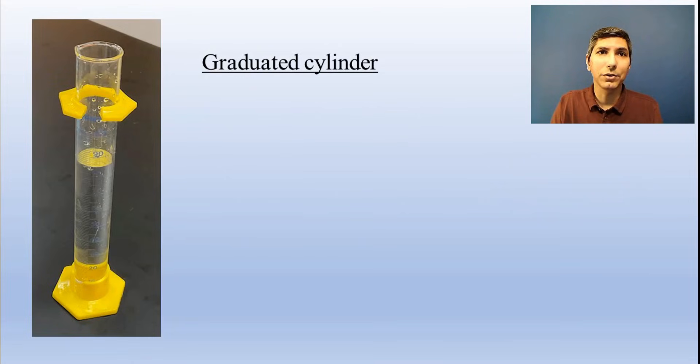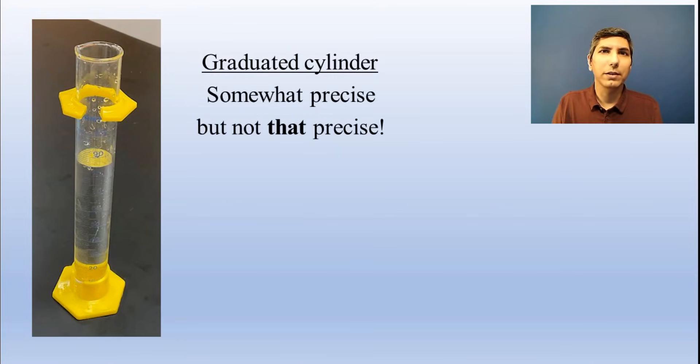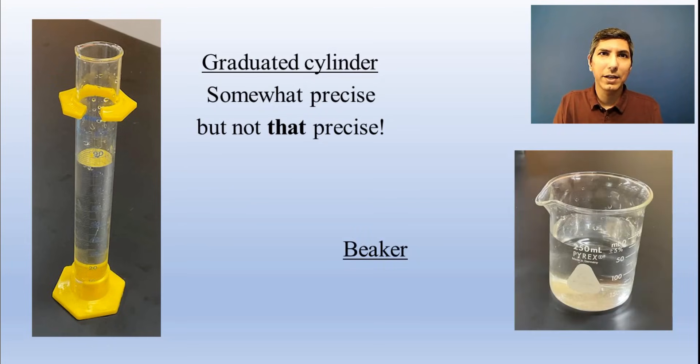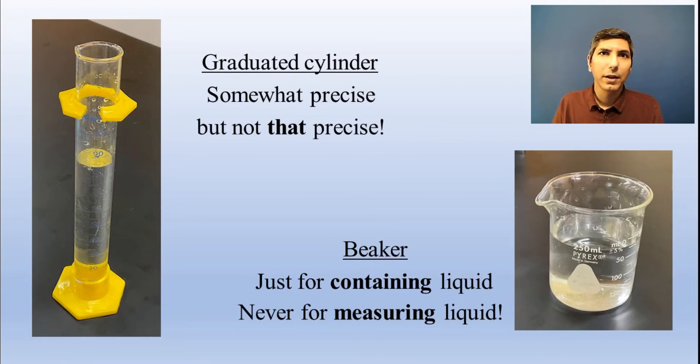A graduated cylinder can be used for dispensing a somewhat precise volume, accurate to within a couple of milliliters. Graduated cylinders are not precision instruments though. Now the least precise measuring instrument for liquids is a beaker. Beakers are just glorified cups. We use beakers just to contain a liquid or a solution, never to measure it. The volume marks on a beaker are very approximate and shouldn't be used as a precise measurement for anything.